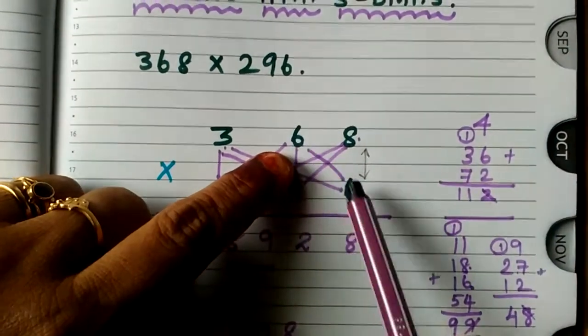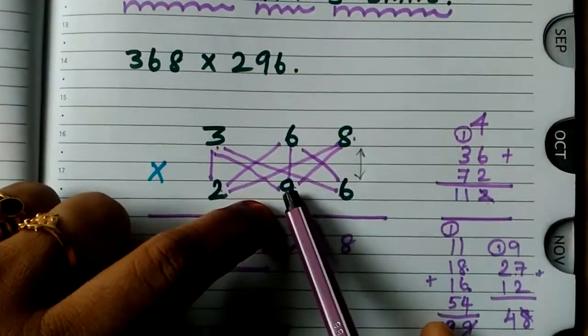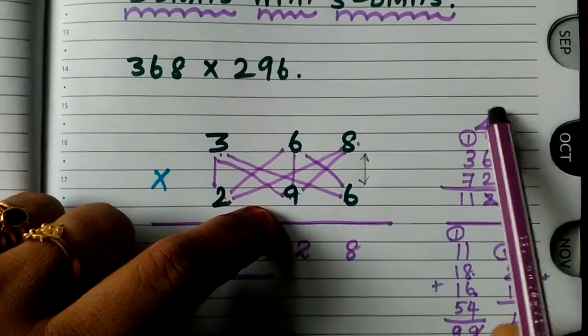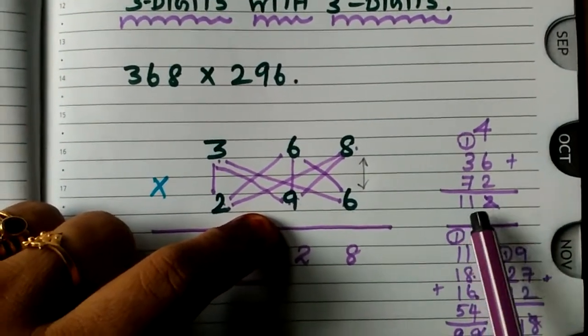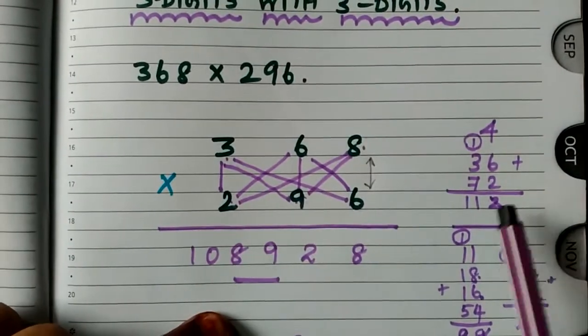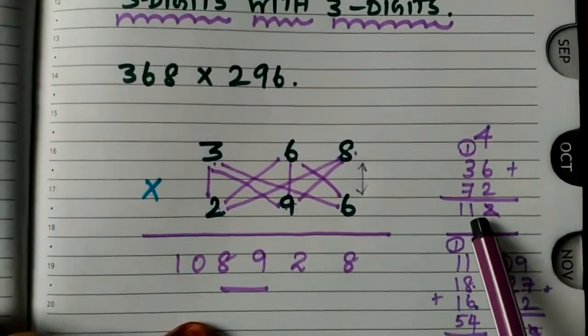The next part: 6 times 6 is 36. 9 times 8 is 72. Together all the numbers we are going to add. If you add, you will get 112. So 2 you have to take and write here. 11 will be carried over.